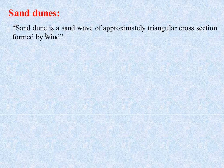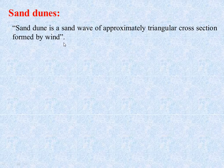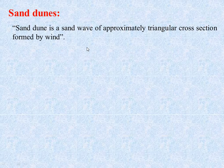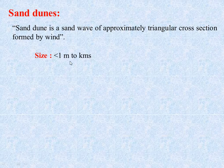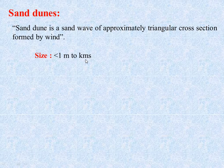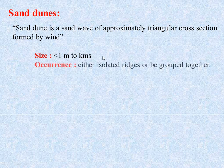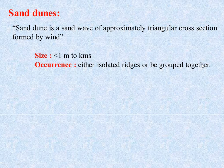The definition of sand dune is a sand wave of approximately triangular cross section formed by wind. In simple terms, it's a mound or ridge formed by wind deposition on loose sand. Their size can be variable, from around 1 meter to several kilometers, and they mainly occur as isolated ridges or grouped together.